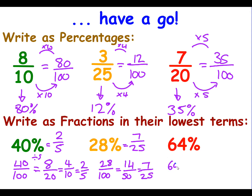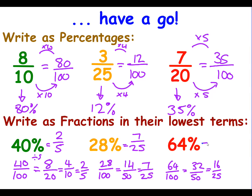Finally, 64%: 64% means 64 over 100. Divide both by 2 to get 32 over 50. Divide by 2 again to get 16 over 25. I can't divide by 2 anymore. Checking other factors — 4, 5, 6, 7, 8 — none go into both 16 and 25. So I can stop there. 64% is the same as 16 over 25 as a fraction in its simplest form.